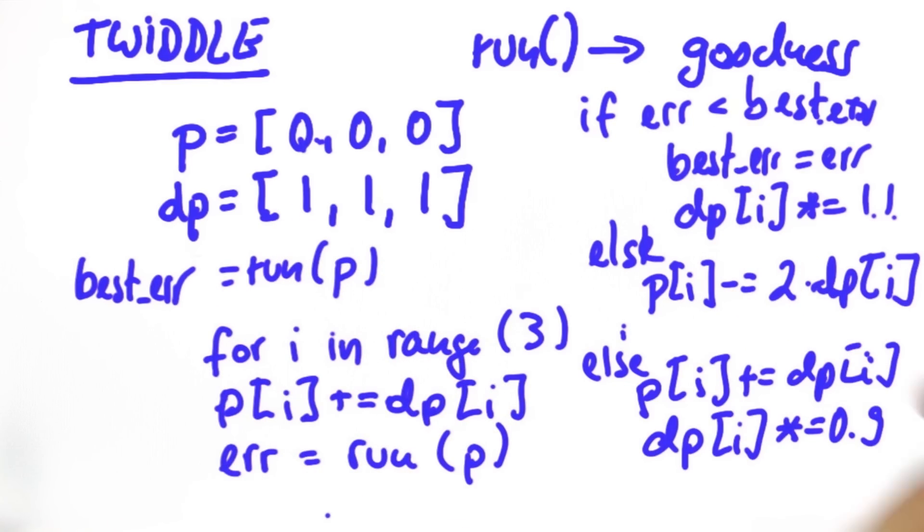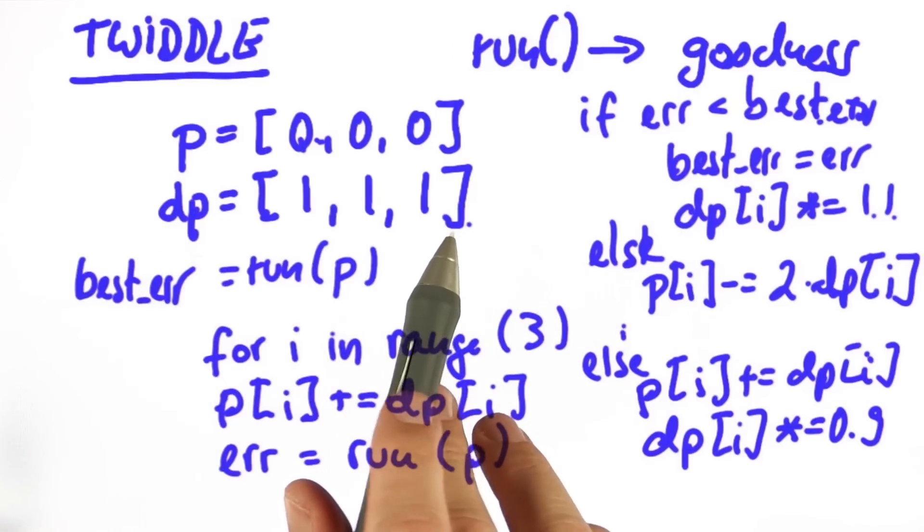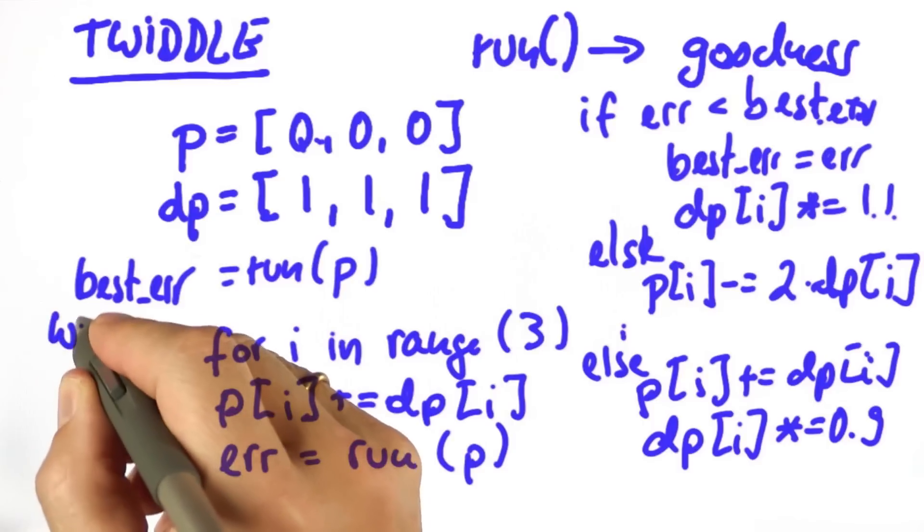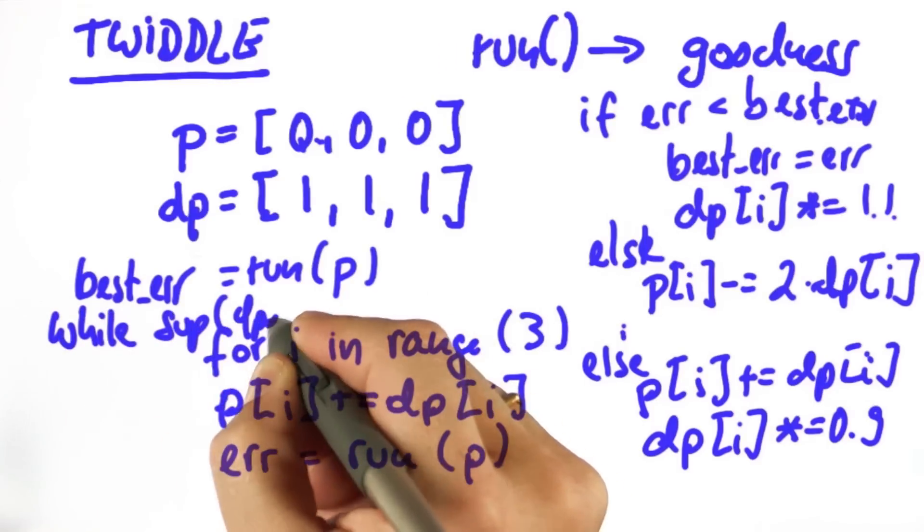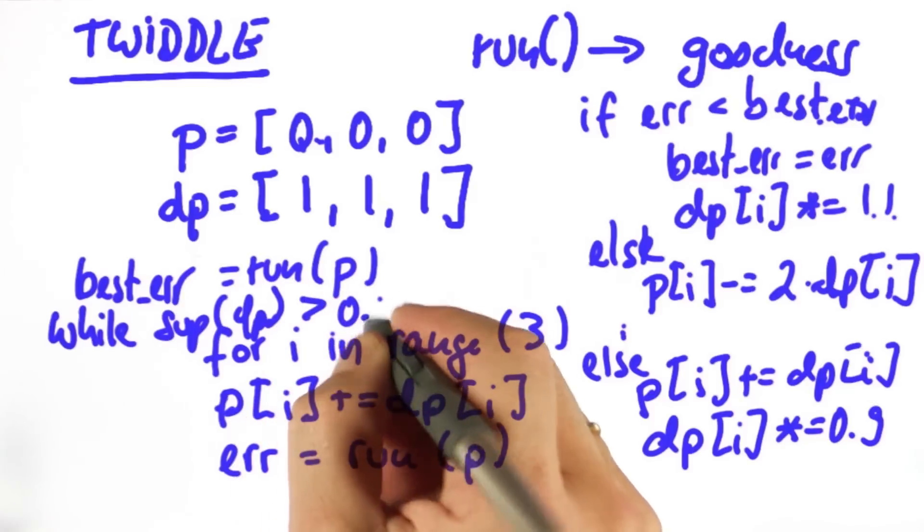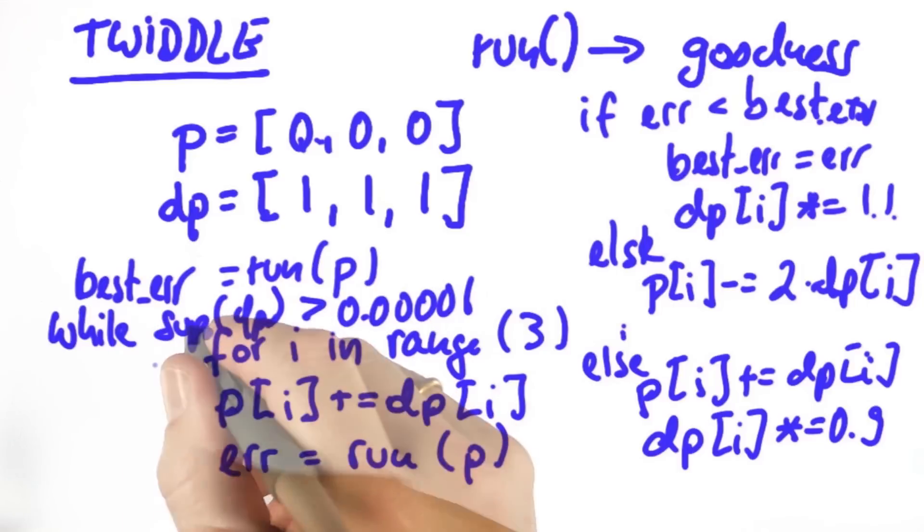We do this entire thing so long as the sum of the dps is larger than the threshold. So somewhere in here, we say while sum of dp is larger than 0.00001. It's hard to read, but I hope you could follow it. This is Twiddle.